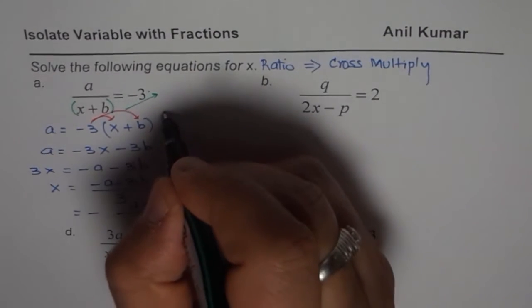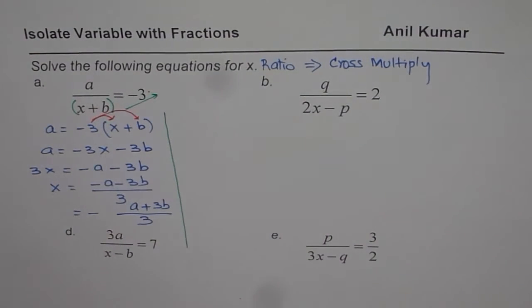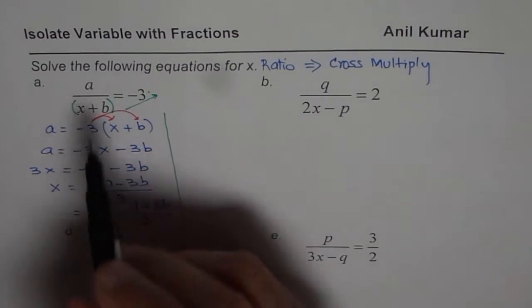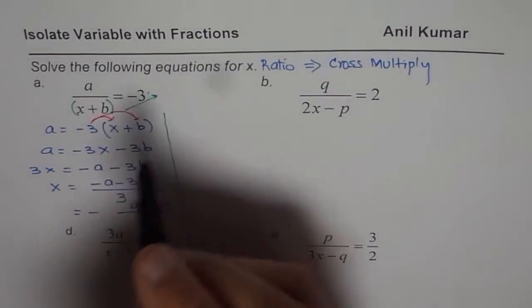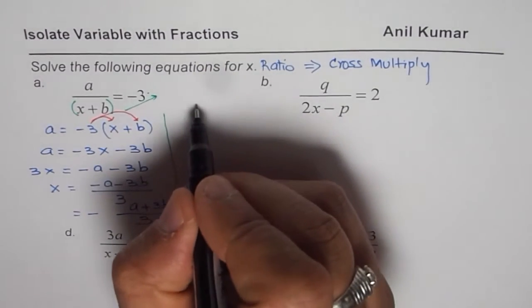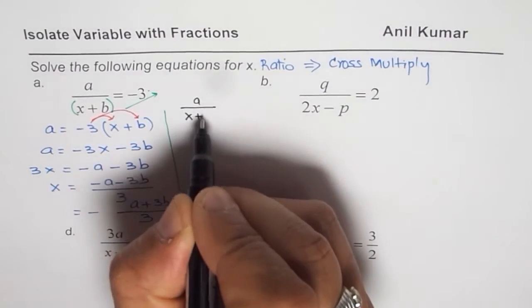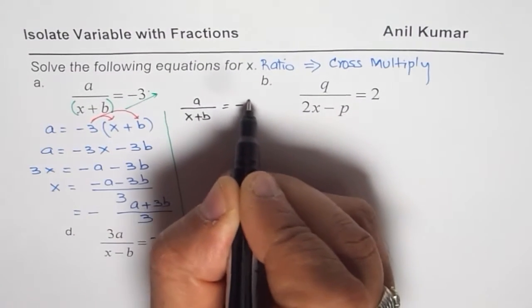Here is an alternate solution to the same question, which is also correct. Let me show you that also. You can cross multiply. Let's begin by writing the question first: a over x plus b equals minus 3.